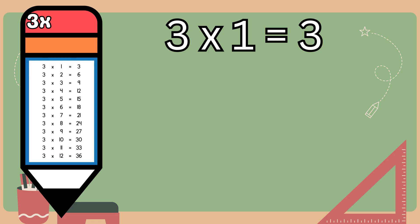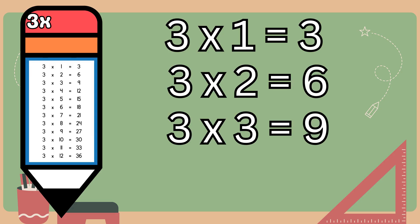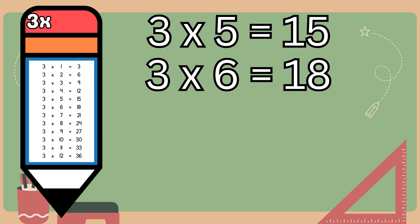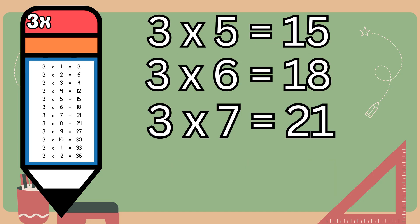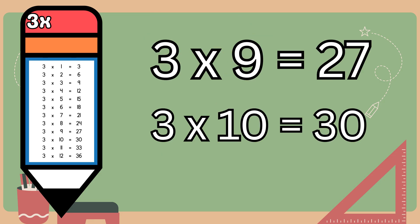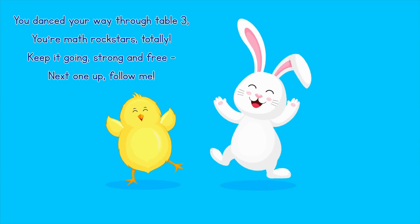Three ones are three, three twos are six, three threes are nine, three fours are twelve, three fives are fifteen, three sixes are eighteen, three sevens are twenty-one, three eights are twenty-four, three nines are twenty-seven, three tens are thirty.